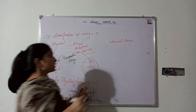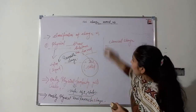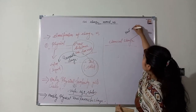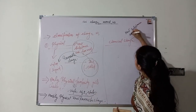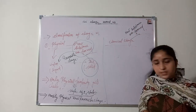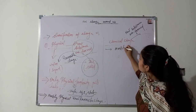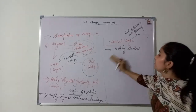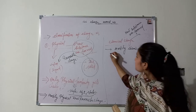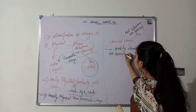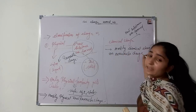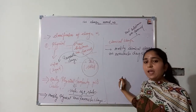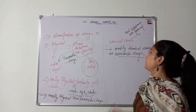Now our last change is chemical change — just the opposite of physical change. In chemical change, new substances are formed. Mostly, chemical changes are irreversible changes, meaning the substance cannot be converted or come back into its original condition or original position after being changed.